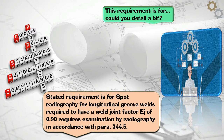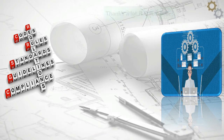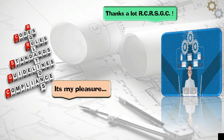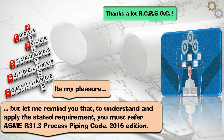The stated requirement is for spot radiography for longitudinal groove welds required to have a weld joint factor EJ of 0.90, and requires examination by radiography in accordance with PARA 344.5. Thanks a lot RCRSGC. It's my pleasure. But let me remind you that to understand and apply the stated requirement, you must refer to ASME B31.3 Process Piping Code, 2016 Edition.